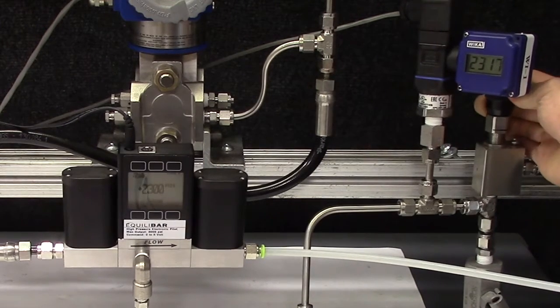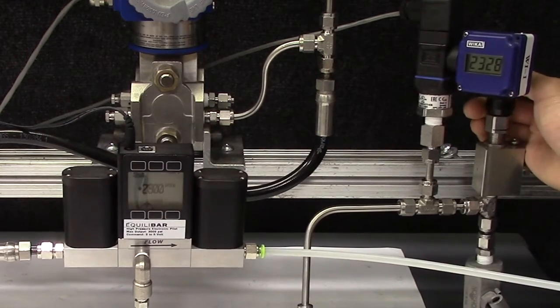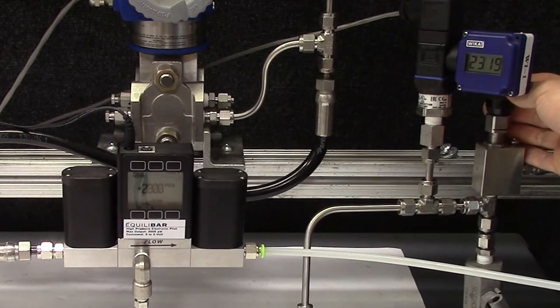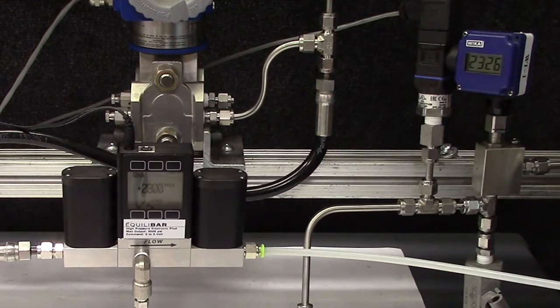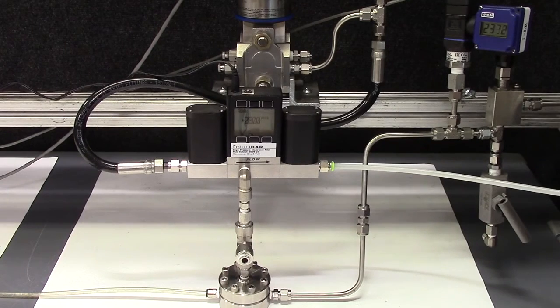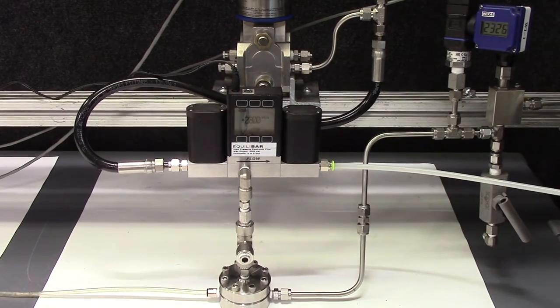Next, I will increase this needle valve to a flow rate of about 15 liters a minute. Once again, the pilot pressure and inlet pressure are stable at 2300 PSI.